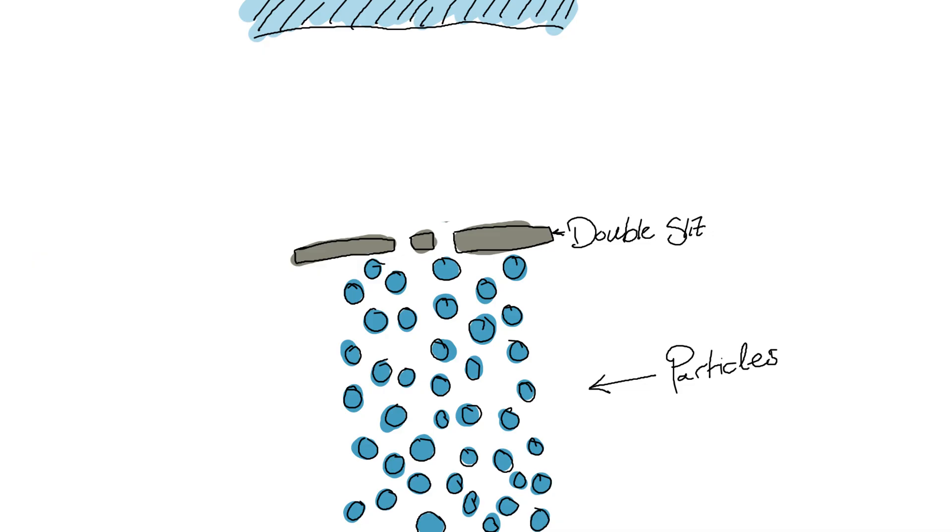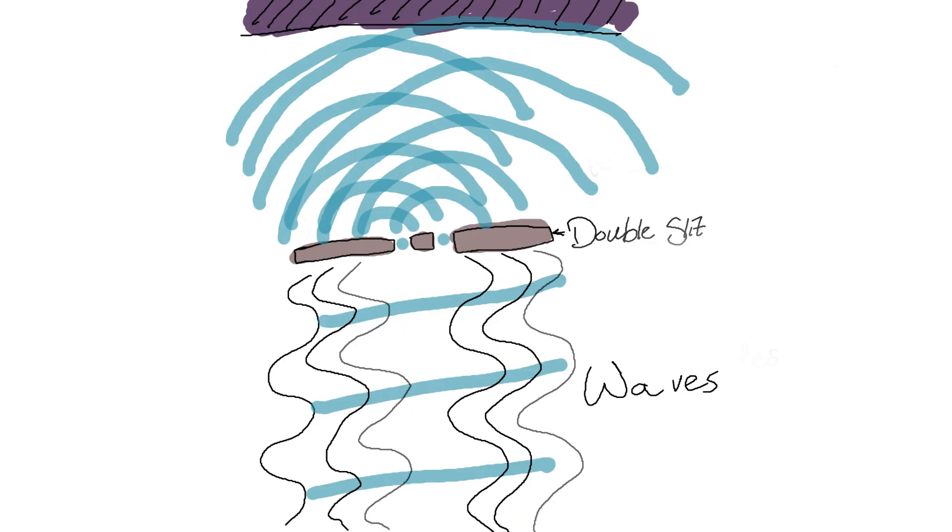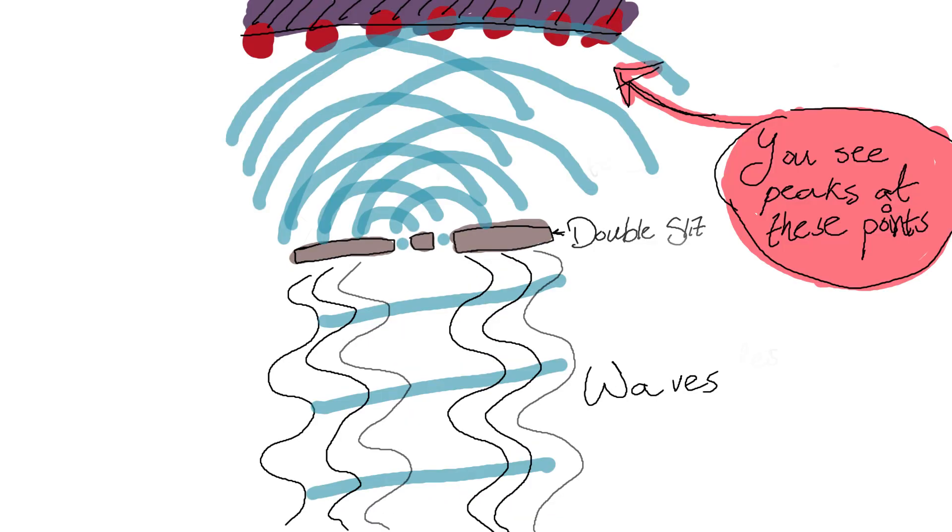And the double-slit experiment shows this beautifully. If you fire particles like electrons at a barrier with two slits, you might expect to see two lines on the screen behind it, as if the particles were going straight through just the slits. But light and even electrons behave like waves as well. So when they pass through the two slits, they spread out and they interfere with each other.